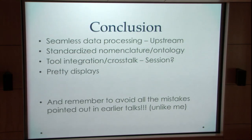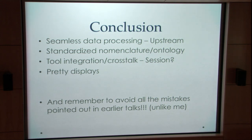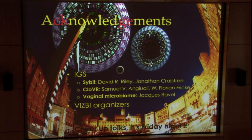In conclusion, for visualization of comparative genomics and metagenomics data, we want seamless upstream data processing, robust and reproducible pipelines, standardized nomenclature and ontology — we need to speak the same language. We want tool integration and crosstalk between platforms. Pretty displays that avoid the mistakes made so far. These are the people who contributed to the parts from IGS that I covered, and I thank the organizers for getting me here.